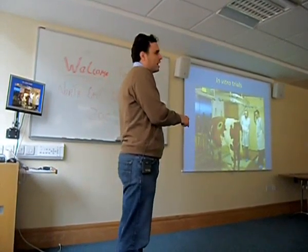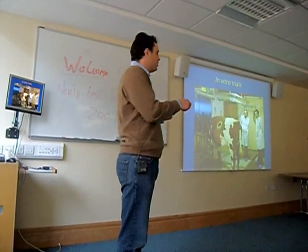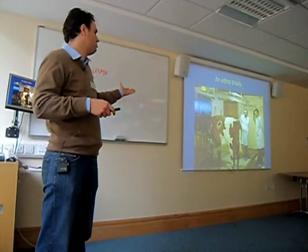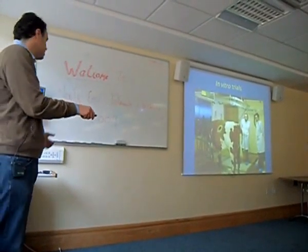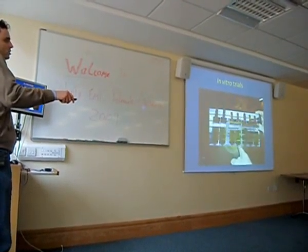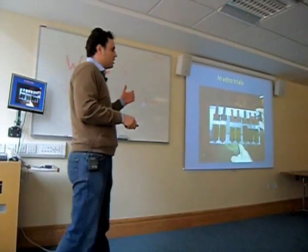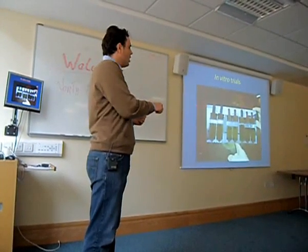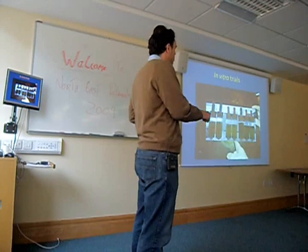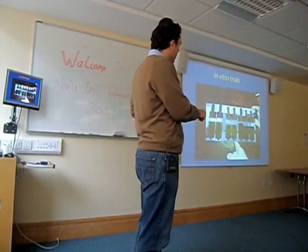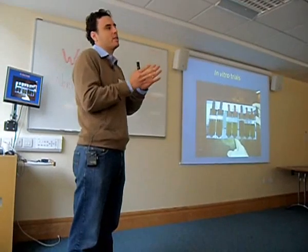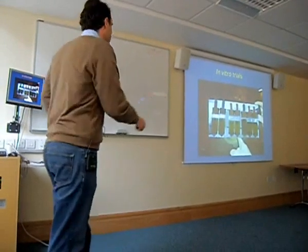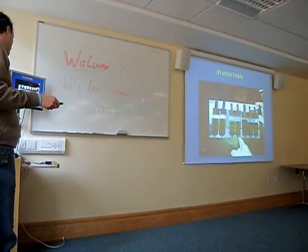We use some fistulated animals — some of you may not agree with the use of these animals — but when you sacrifice five or six to collect rumen fluids and use test tubes in the lab, you are saving thousands of animals. Each test tube can represent one animal. We mimic the same conditions of the animal, and this is the main methodology used worldwide today.